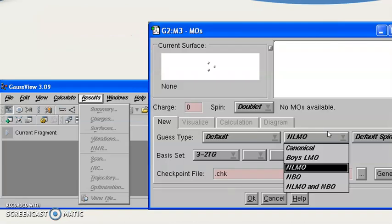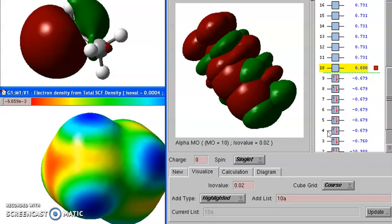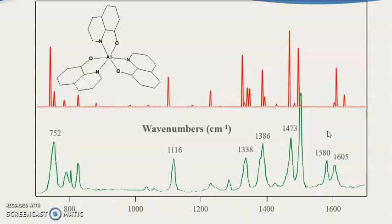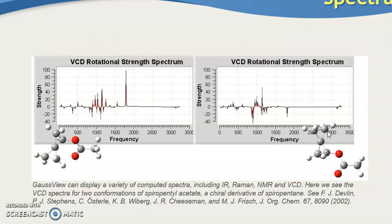Now you can see the results being shown. You can see up to nine highest occupied molecular orbitals (HOMO) and then the lowest unoccupied molecular orbital (LUMO). You can see the wave number in cm⁻¹. This is the vibrational circular dichroism (VCD) spectra.